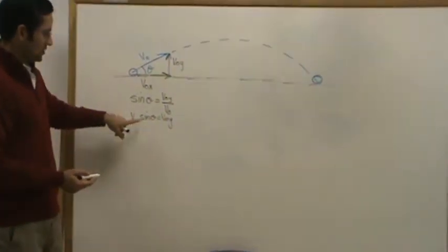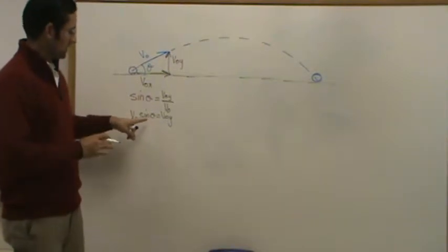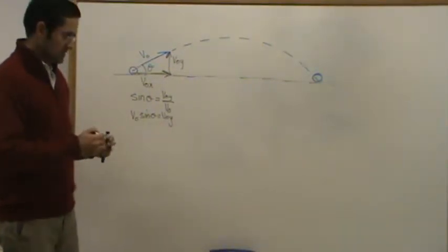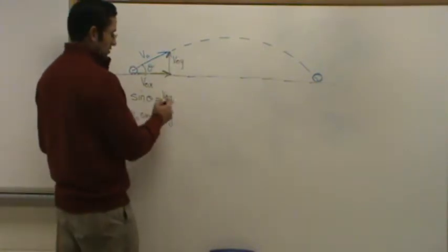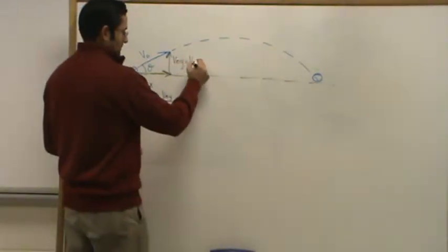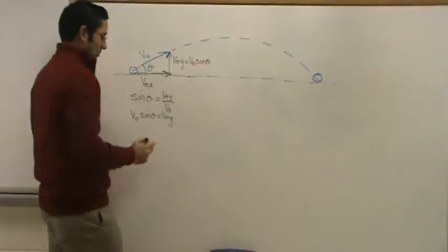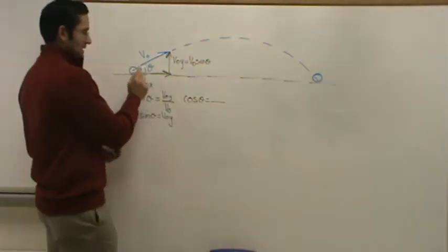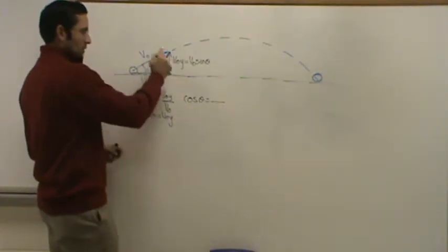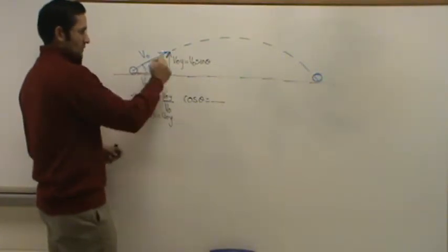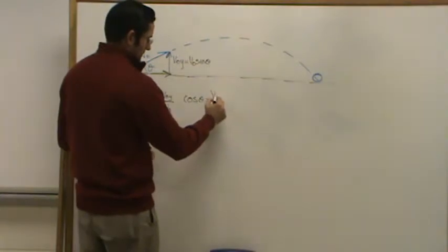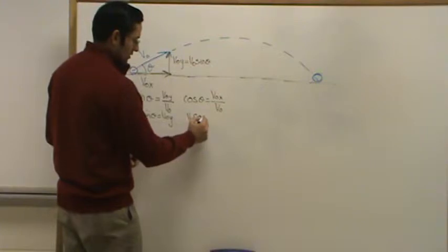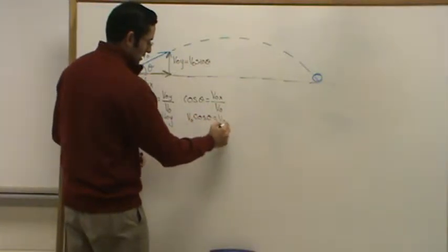You're going to use the same idea to find the horizontal velocity, except you're going to use cosine theta. Cosine theta is adjacent over hypotenuse. The adjacent side is V naught x and your hypotenuse is V naught. Using algebra to bring V naught over, V naught cosine theta equals V naught x.